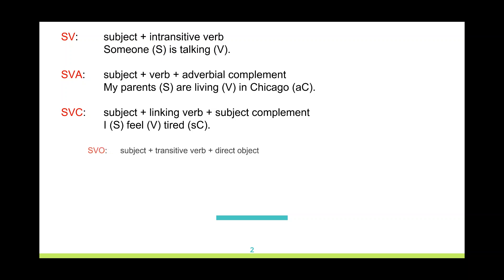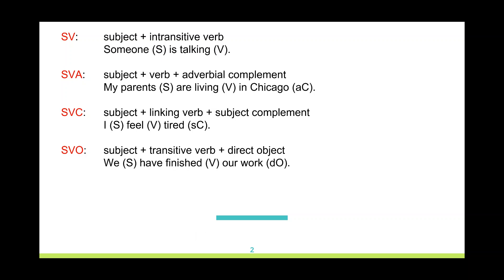The fourth basic structure could have a subject, a transitive verb, and a direct object. Look at the example: 'we' — this is the subject — 'have finished' — this is the verb phrase — 'our work' — direct object.